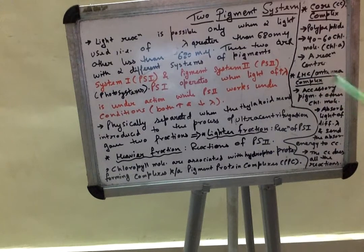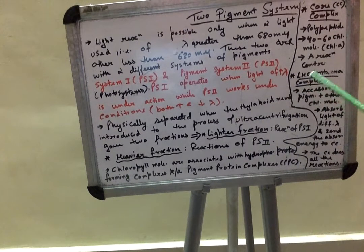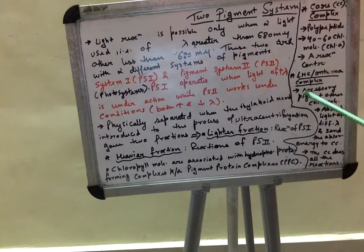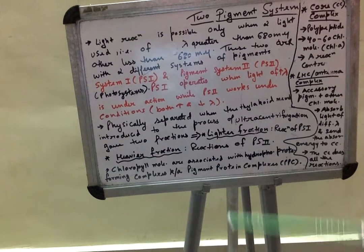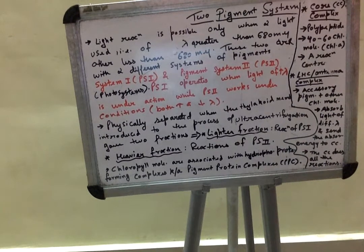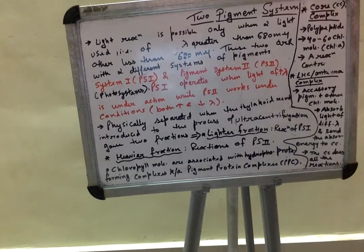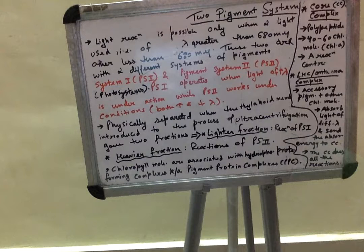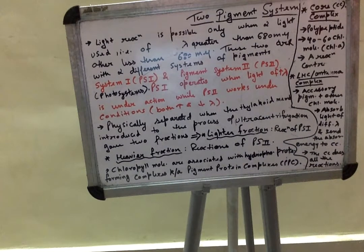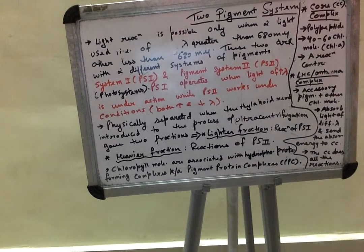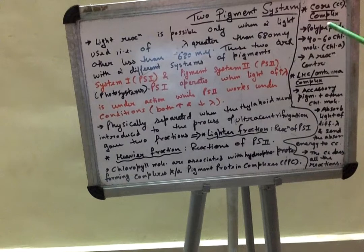The light harvesting complex or antenna complex involves all the accessory pigments — xanthophyll and carotenoids — along with the remaining chlorophyll molecules, that is chlorophyll b and chlorophyll c. These are present along with accessory pigments in the light harvesting complex or core antenna complex.